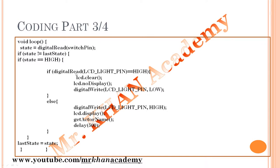If `digitalRead(LCD_LIGHT_PIN)` is HIGH, then the display should turn off — so I call `lcd.clear()`, `lcd.noDisplay()`, and `digitalWrite(LCD_LIGHT_PIN, LOW)`. Else, if it is already off, I turn it on: `digitalWrite(LCD_LIGHT_PIN, HIGH)`, `lcd.display()`.